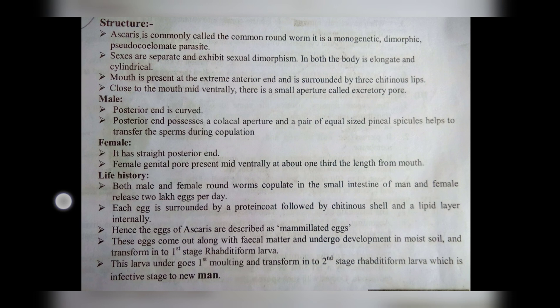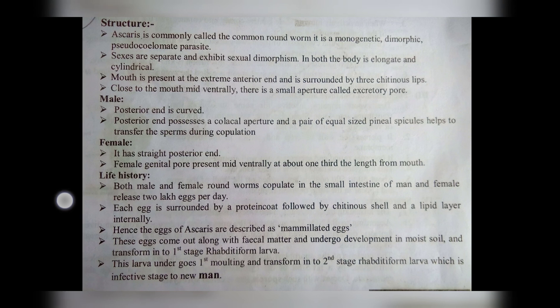These eggs come out along with fecal matter and undergo development in moist soil, transforming into first-stage rhabditiform larvae. This larva undergoes the first moulting and transforms into second-stage rhabditiform larvae, which is the infective stage to the new host.